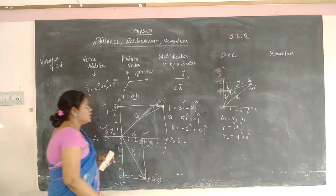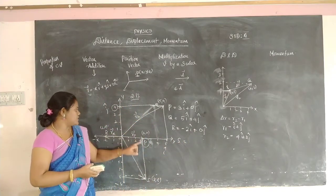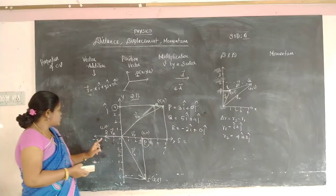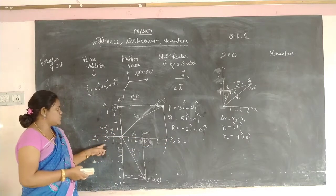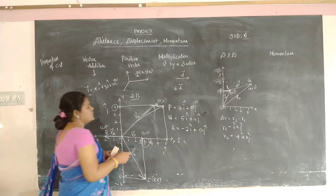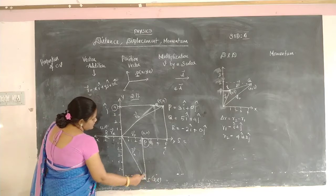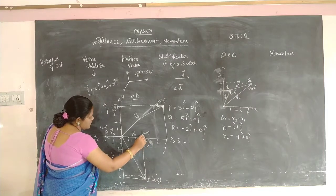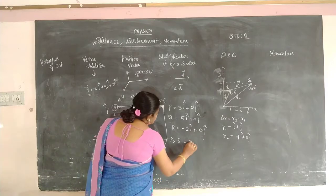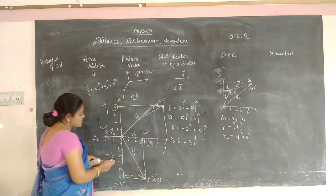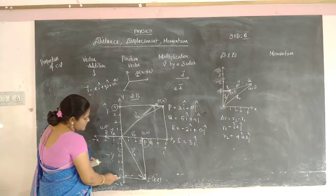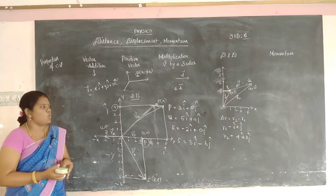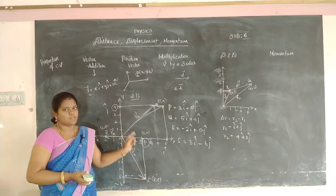So summarizing: P = 3·i + 0·j; Q = 5·i + 4·j; R = −2·i + 0·j. Now S: S is in the opposite Y direction, so minus Y. X-axis is 3, so 3·i, but Y-axis is opposite so −3·j — giving S = 3·i − 3·j. These are the position vectors for P, Q, R, and S as shown in the graph.